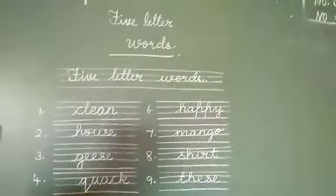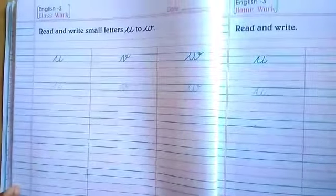So children, today we have learnt 5 letter words. Parents, in the last class children wrote 4 letter words. In the next page make your child write 5 letter words. Write the date. Make the child learn all 10 five-letter words in English classwork, and also in the English form book.